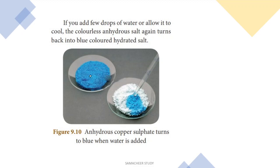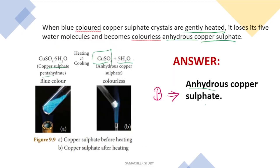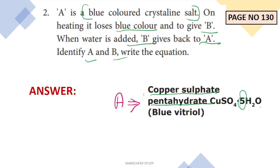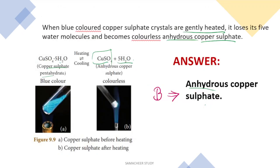When water is added back to the white anhydrous copper sulphate, it becomes Copper Sulphate Pentahydrate again. So the reaction is reversible. The equation for this process is the answer to the question.